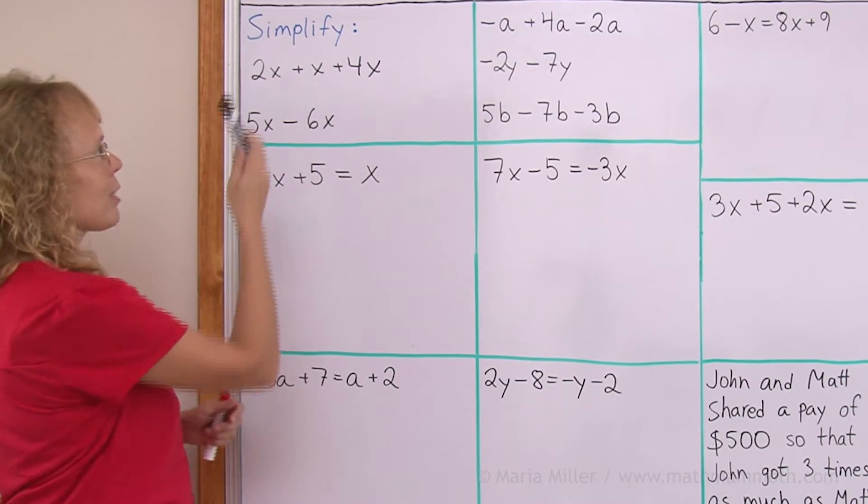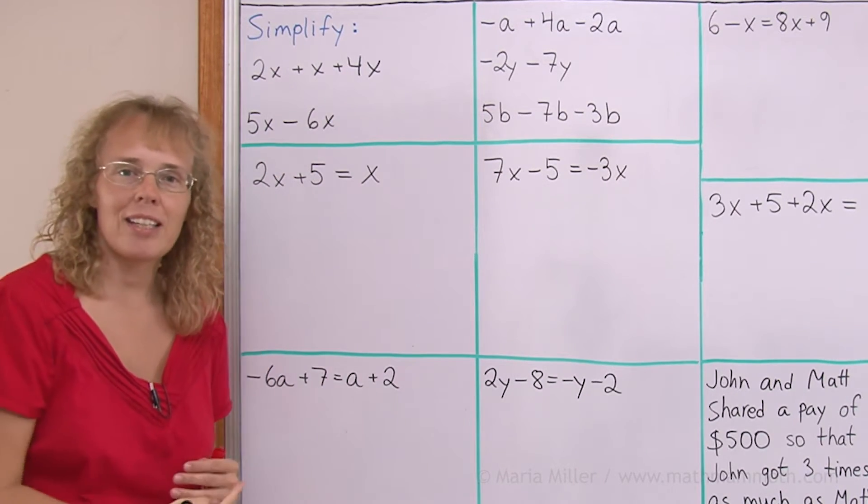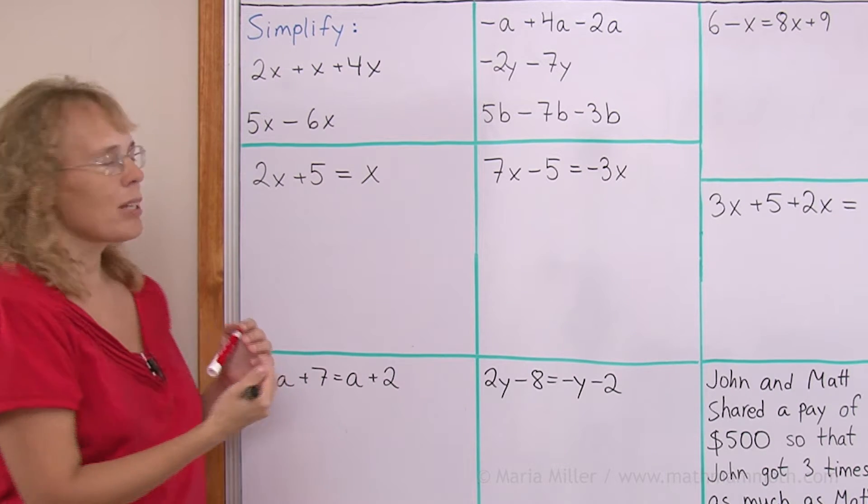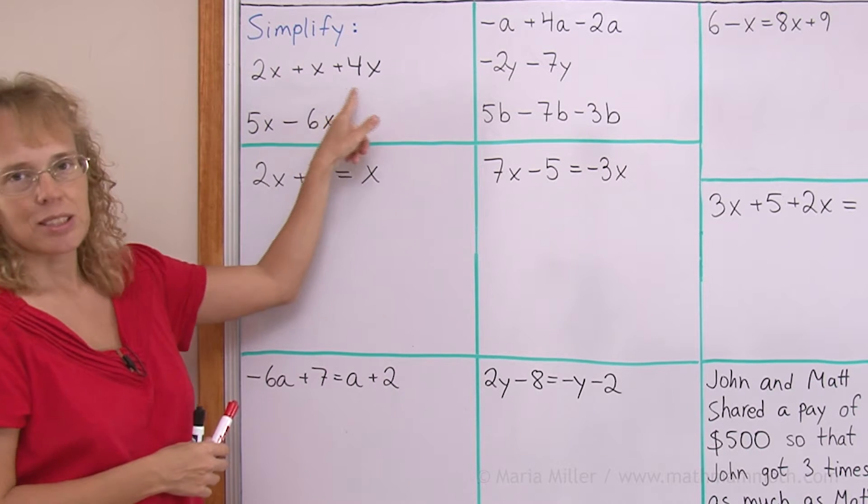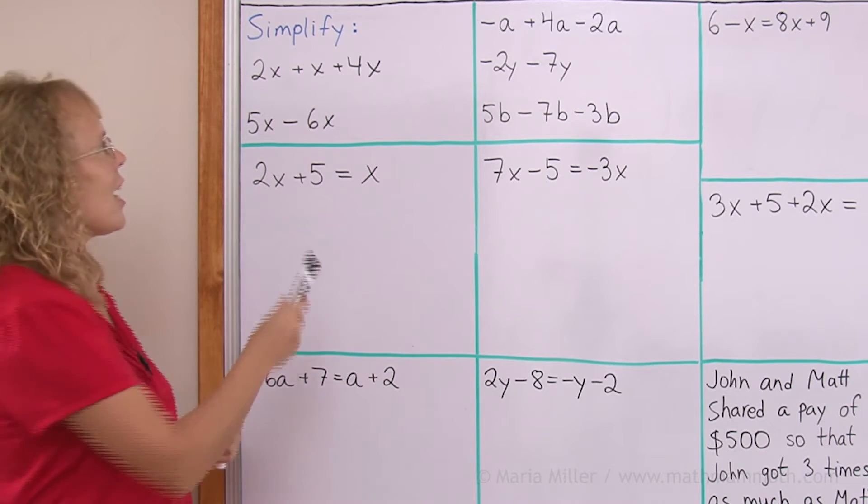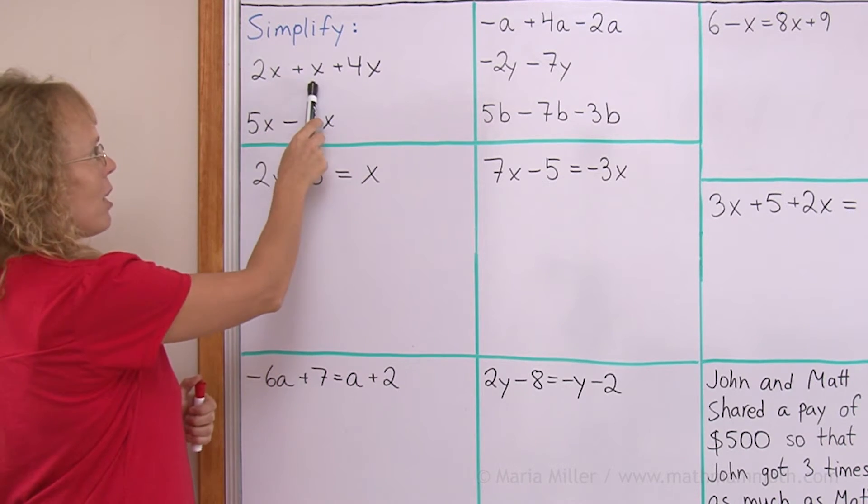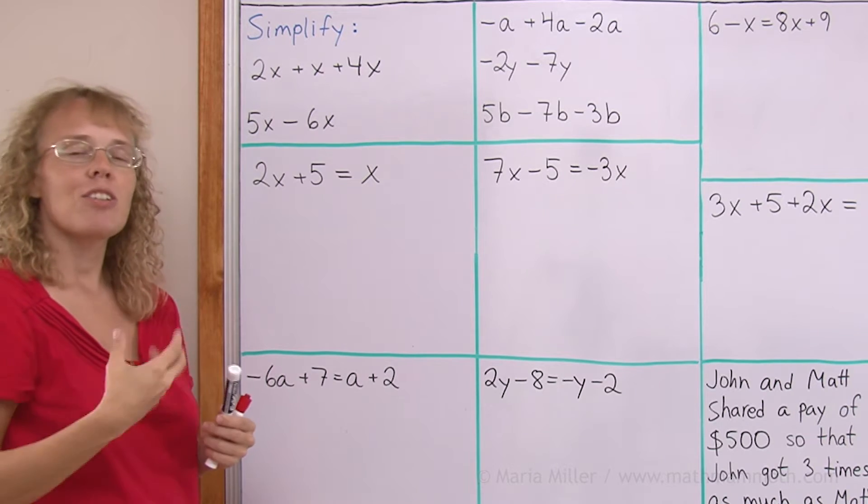Let's say you have 2x plus x plus 4x. How can we simplify that? Well, just think of the x as being, for example, bananas. 2 bananas plus a banana plus 4 bananas. You just add the 2 and 4 and 1 and you get 7, and so the answer is 7x.